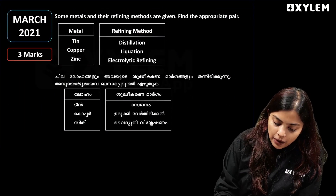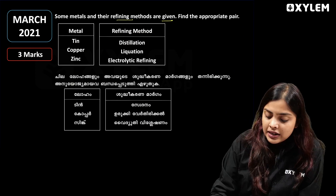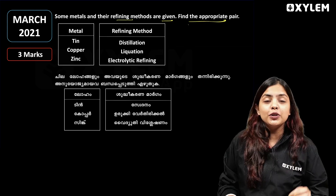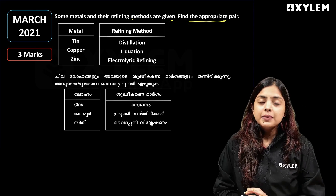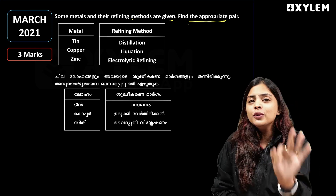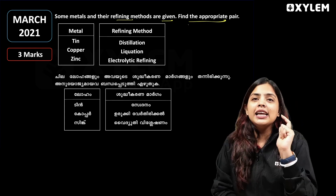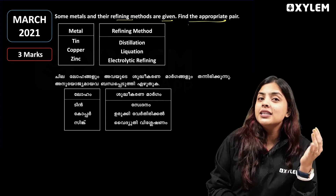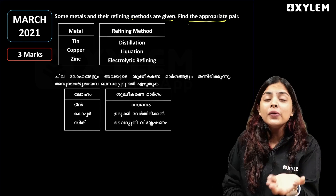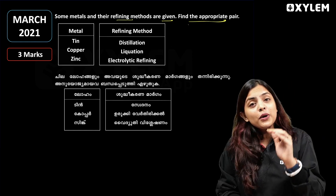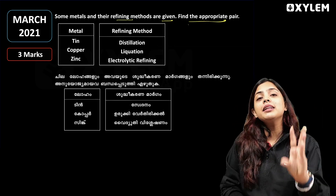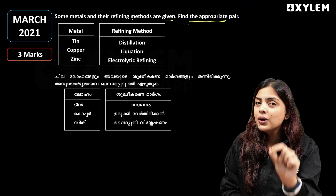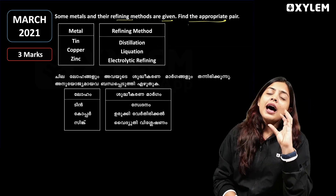Next question: some refining methods are given — find the appropriate pair. The refining methods are liquation, distillation, and electrolytic refining. Liquation uses a low melting point — examples include tin, lead, and bismuth. Liquation is the liquid refining method used when the metal has a low melting point.